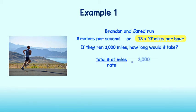To determine the answer, we can divide the total number of miles by the rate they run. We know they are running a total of 3,000 miles, which we'll divide by 1.8 times 10 to the first miles per hour. Since we are working with the total that is in miles, the rate in miles will best help us with our calculations.